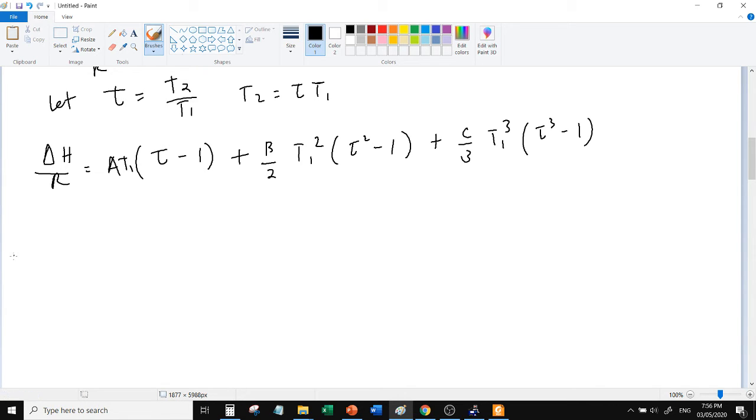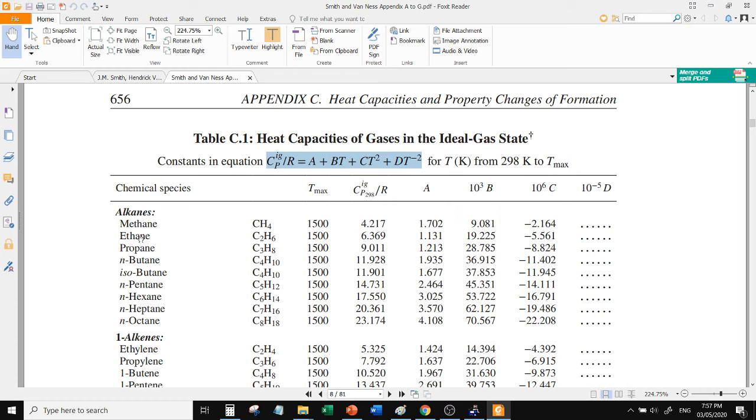So delta H - actually we can replace this with Q. Q was given as 800 kilojoules over R, which is 8.314 joules per mole kelvin. We need to multiply by the number of moles, 10 moles, so that kelvin is the remaining unit. Wait, this is kilojoules, so we should make it joules: 800 thousand joules to cancel out. That's the left side of the equation.